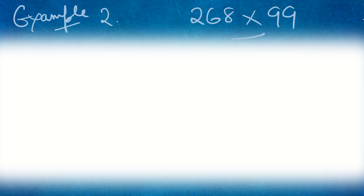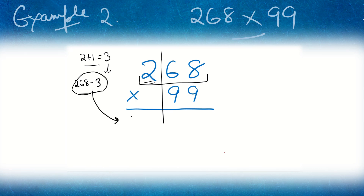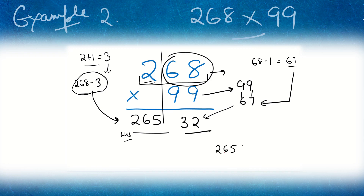Let's try another example: 268 × 99. Split the number — 2 is the extra digit, so that's the left portion. Add 1: 2 + 1 = 3. Then subtract 3 from the complete first number: 268 − 3 = 265. That is the LHS. Now the right portion is 68; subtract 1 to get 67. Subtract 67 from 9s: 9−6 = 3, 9−7 = 2. So 26532 is the final answer.